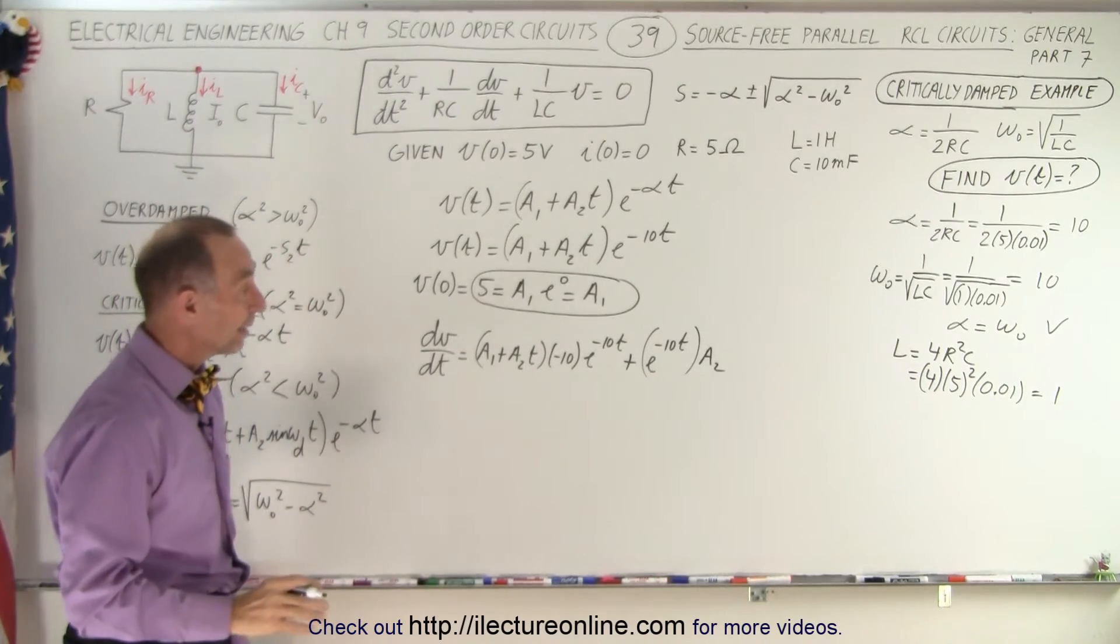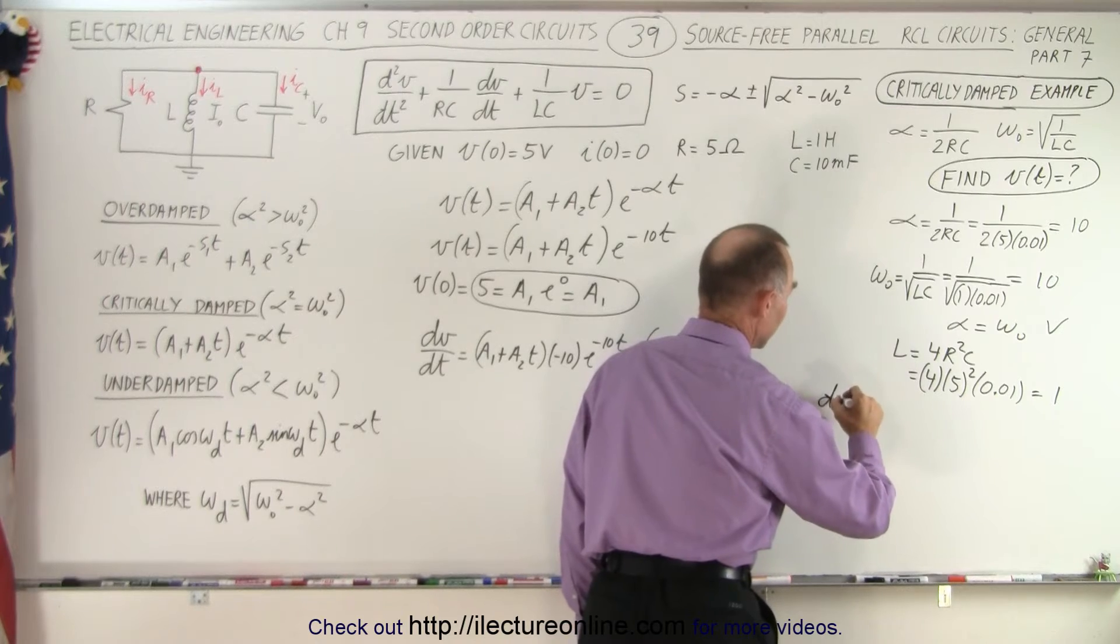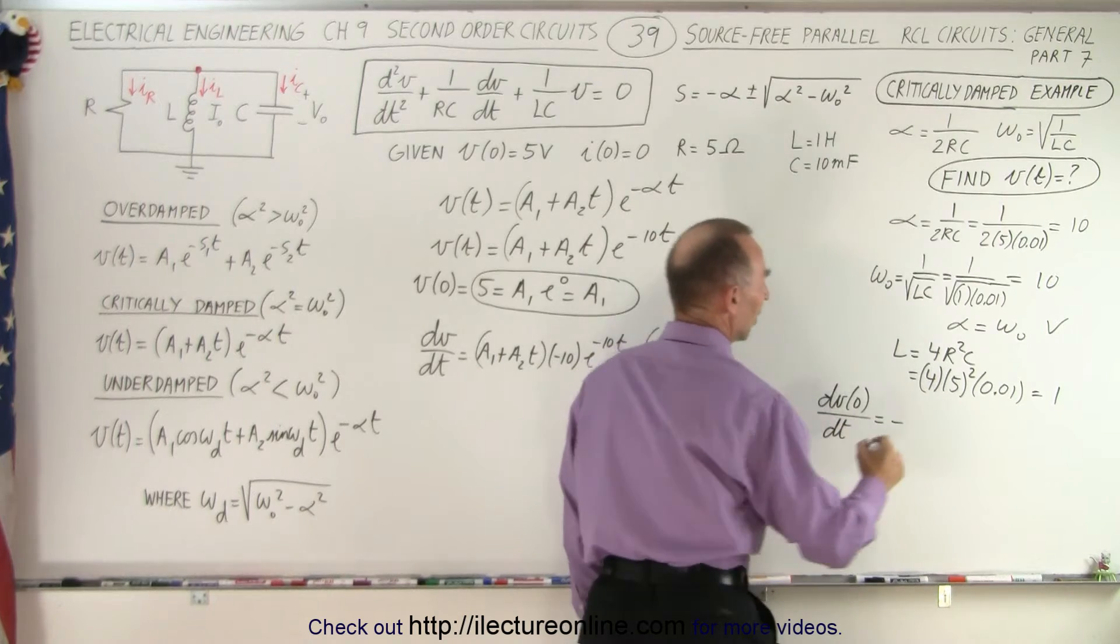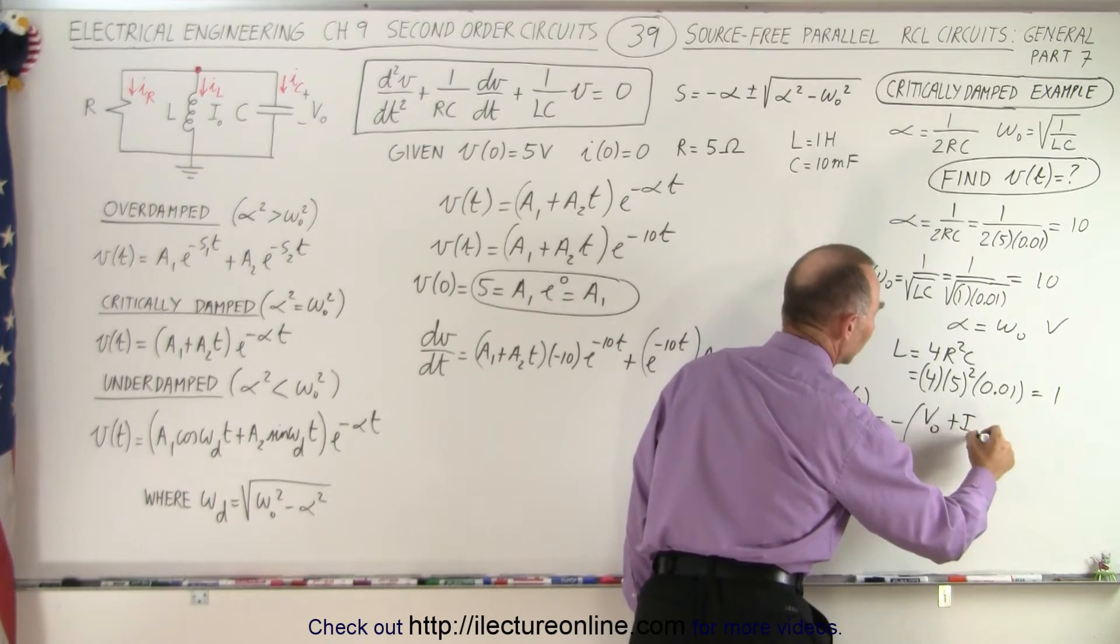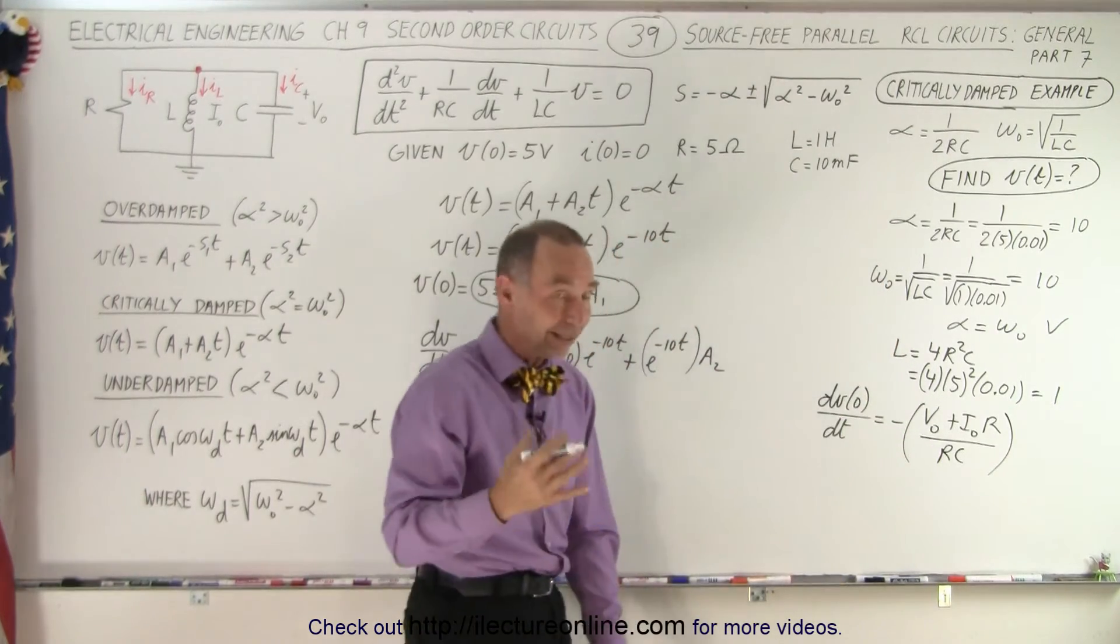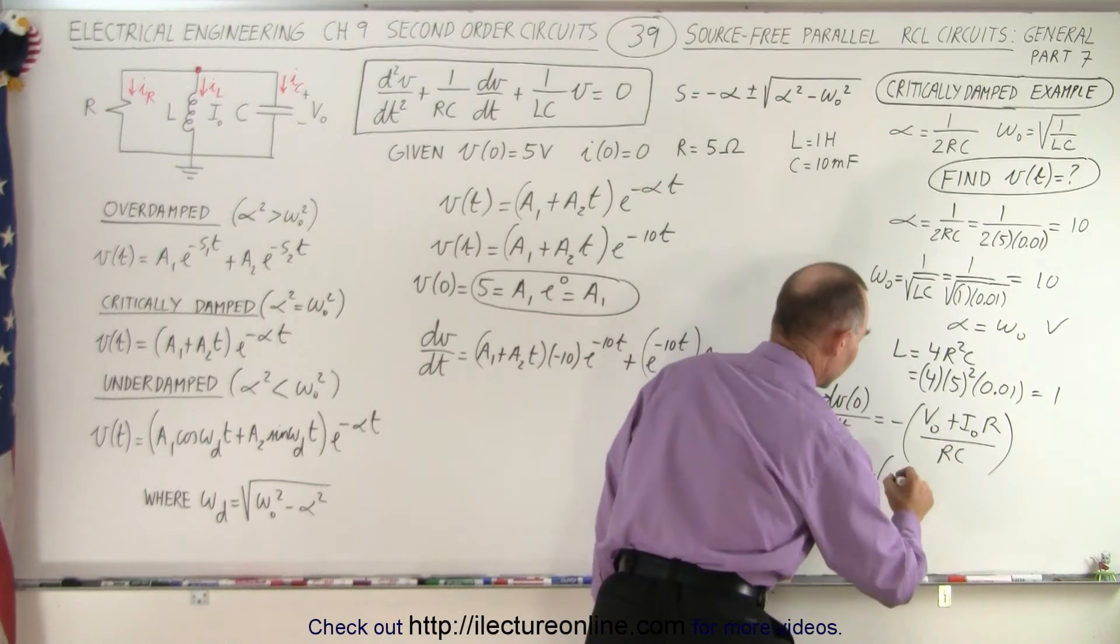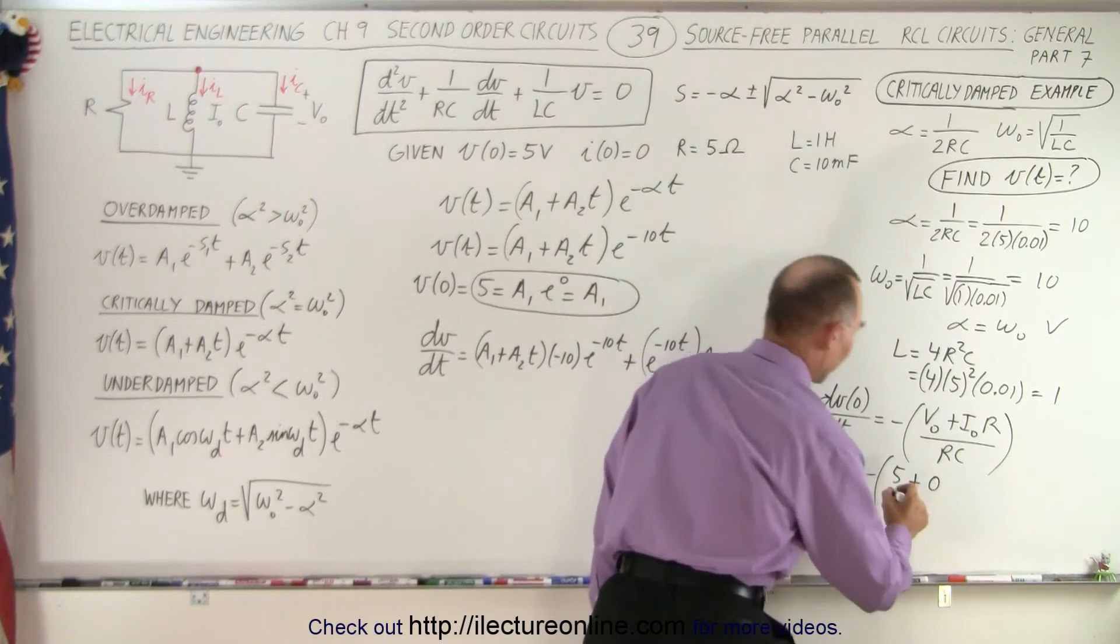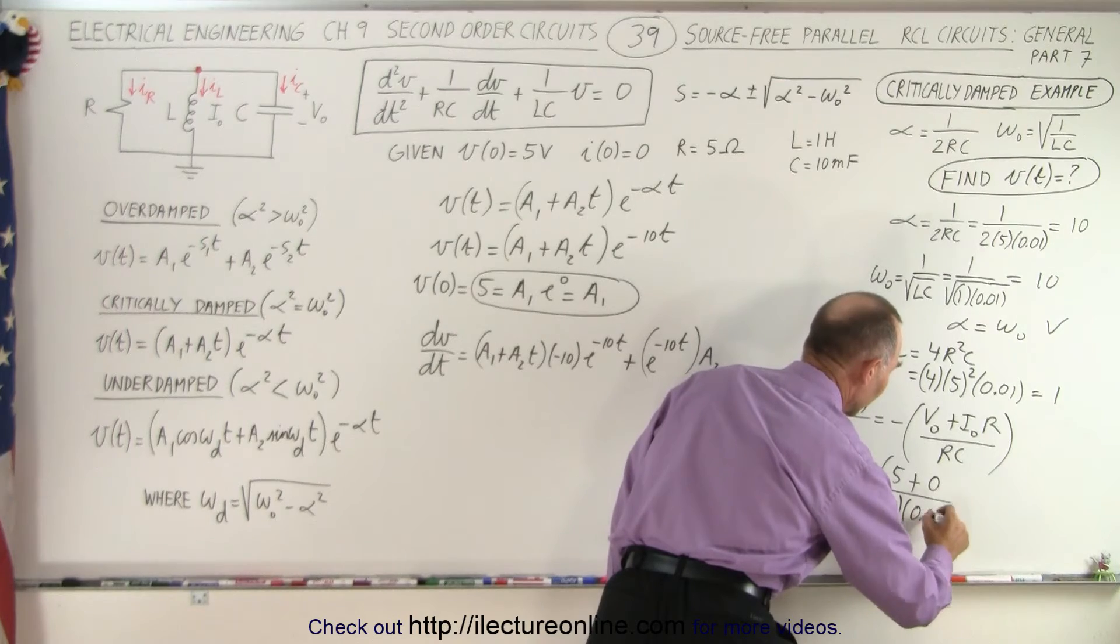Now we realize that the initial condition tells us that dV when time is equal to 0 dt is equal to the negative of V initial plus I initial times R over RC. So with the new values let's calculate what that should be equal to so this is equal to minus V initial which is 5 plus I initial which is 0 divided by R which is 5 times C which is 0.01.